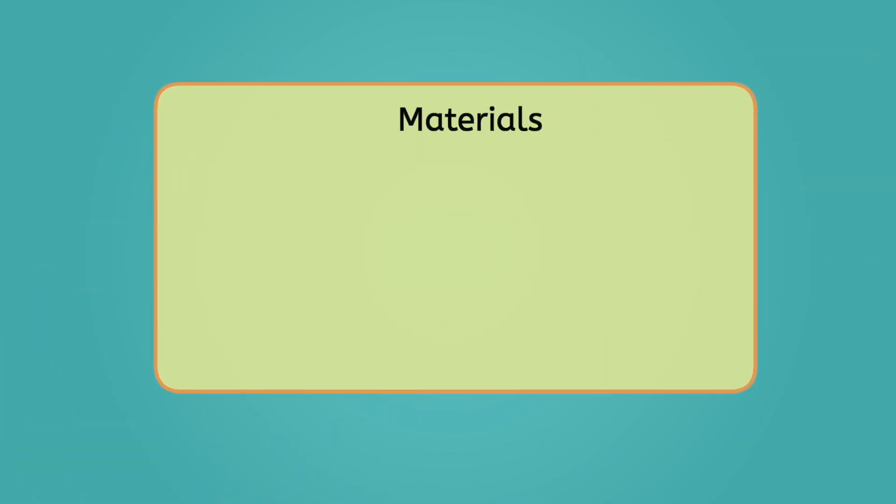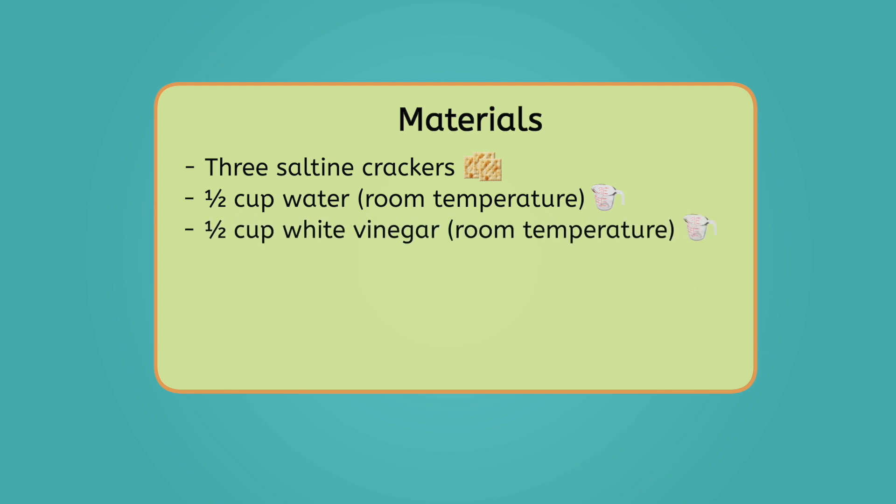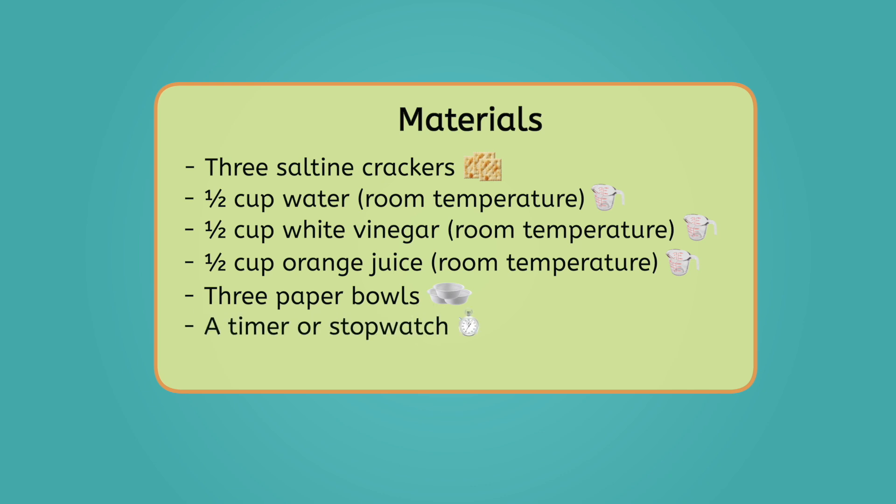make sure to read through all of the steps of the procedure. For this experiment, you'll need: three saltine crackers, half cup of room temperature water, white vinegar and orange juice, three paper bowls or other containers of the same size, a timer or stopwatch, and a marker to label your testing groups.